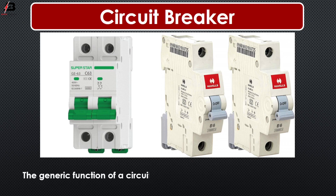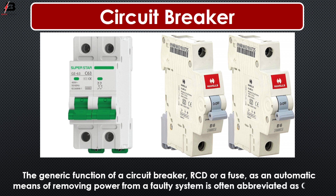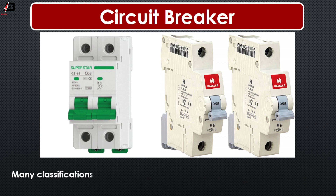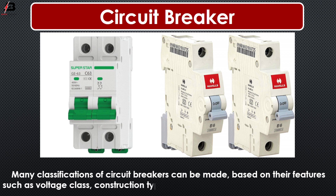The generic function of a circuit breaker, RCD, or a fuse as an automatic means of removing power from a faulty system is often abbreviated as OCPD. Mainly, classification of circuit breakers can be made based on their features such as voltage classes, construction type, interrupting type, and structural features.